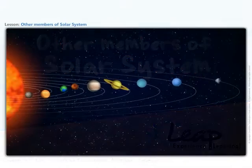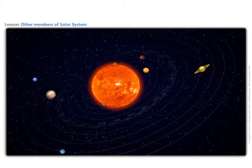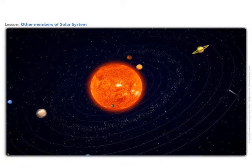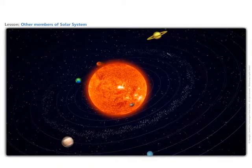You have learned about the planets. There are certain other bodies which revolve around the Sun and are also members of the solar system. Let us take a look at some of them. Take a closer look at this animation.